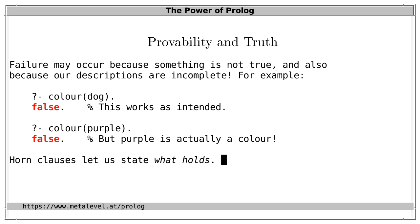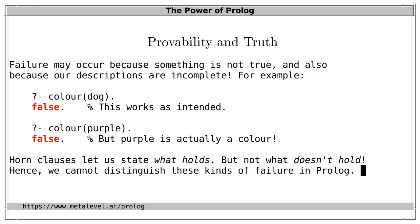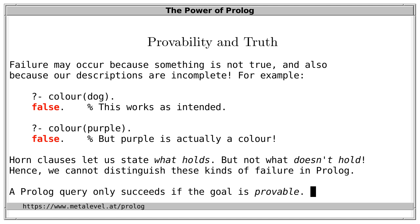Since Horn clauses only let us state what holds but not what doesn't hold, we actually can't distinguish these two different kinds of failure in Prolog. It is in fact consistent with our sample program that purple is a color and also that dog is a color. But a Prolog query only succeeds if the goal is provable and therefore a semantic consequence of the program. So when a query fails, that doesn't necessarily mean it must not hold — it only means the goal is not provable. A failing query may also indicate that we have forgotten to state something that is the case.